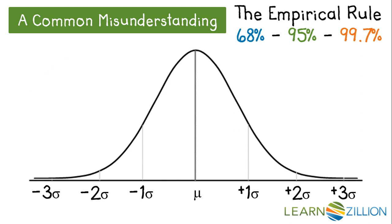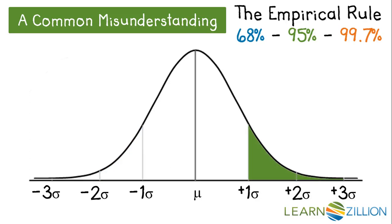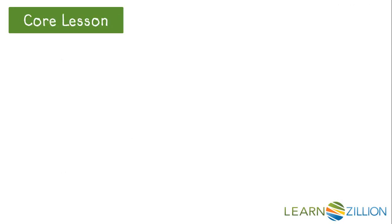For example, you could find the percent that falls between two and one standard deviations below the mean using the empirical rule. Or you could find the percentage that falls between one and three standard deviations above the mean by applying the empirical rule. So let's look at how to do that.